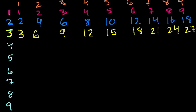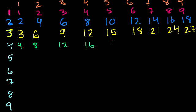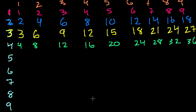Let's speed it up now that we see the pattern. 4 times 1 is 4. I'm just going up by increments of 4: 8, 12, 16, 20, 24. So 4 times 6 is 24. 4 times 7 is 28, then 32, and 36.